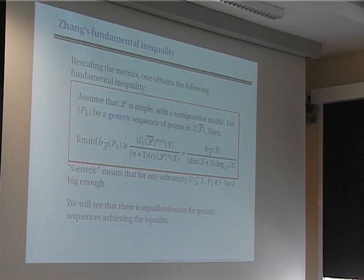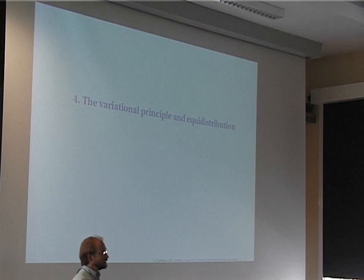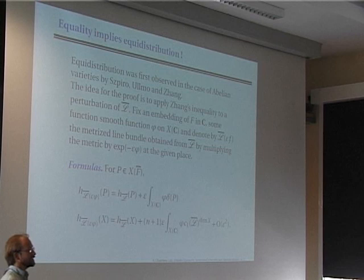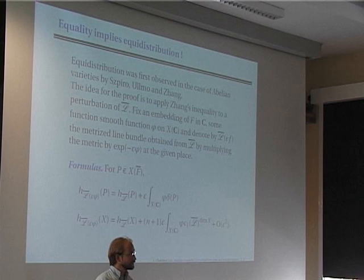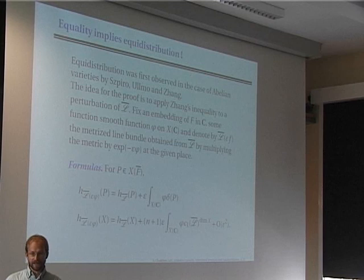Equidistribution is related to a variational principle in Arakelov geometry: I study the preceding inequality not only for L̄ with its metric, but for small deformations of this line bundle. This equidistribution was first observed by Szpiro, Ullmo, and Zhang in their work on abelian varieties, where they observed this equidistribution phenomenon. Their proof was perhaps only given for abelian varieties, but it was clear that it extended to something fairly general.